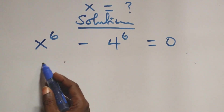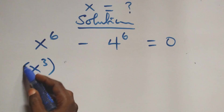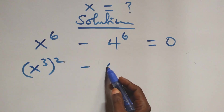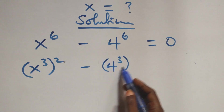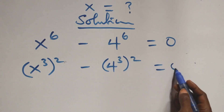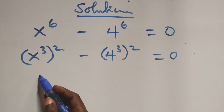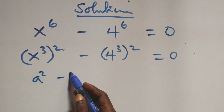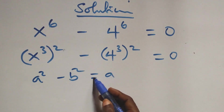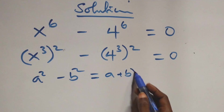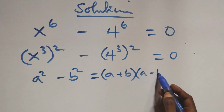We can write this as x raised to the power three squared minus four raised to the power three squared equals to zero, which follows from a squared minus b squared being the same as a plus b into brackets, open brackets a minus b.